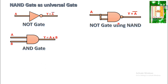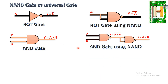Second, implementing AND using NAND. A and B are the inputs to the first NAND gate, whose output is Y equal to the complement of A into B. This output is then given to a second NAND gate, producing Y equal to the double complement of A into B. Since double complement gives the original logic, the result is Y equal to A into B. Both sides match, so we can implement an AND gate using NAND gates.